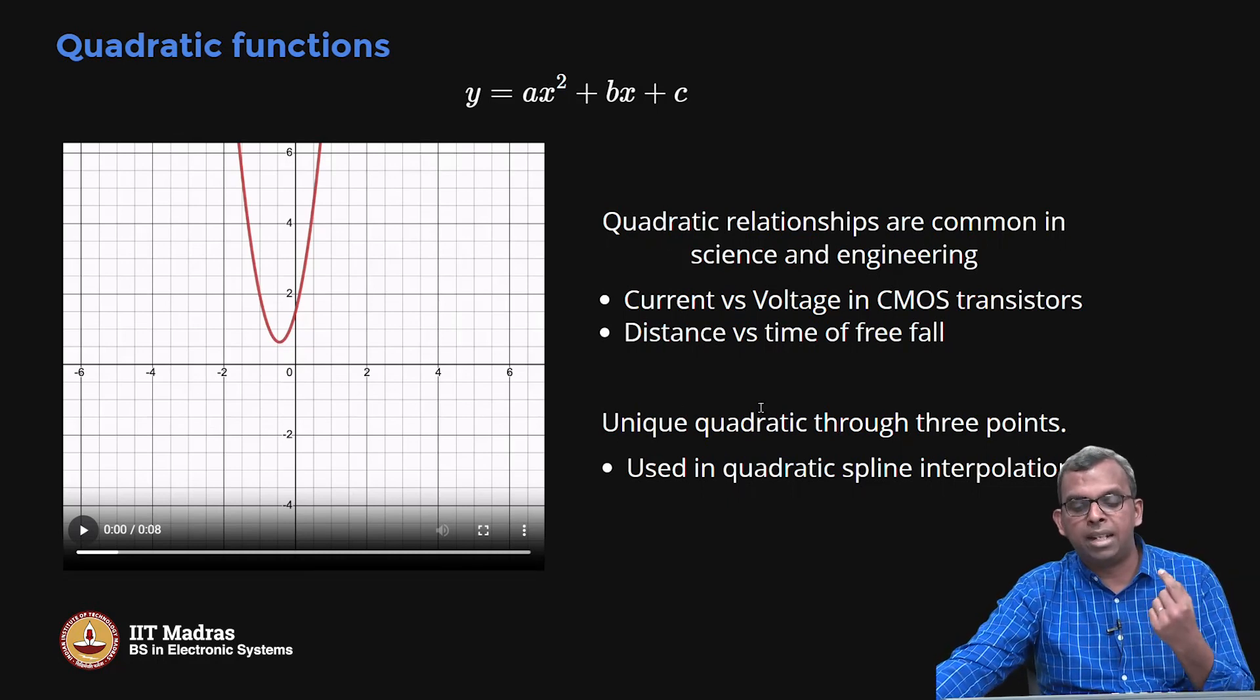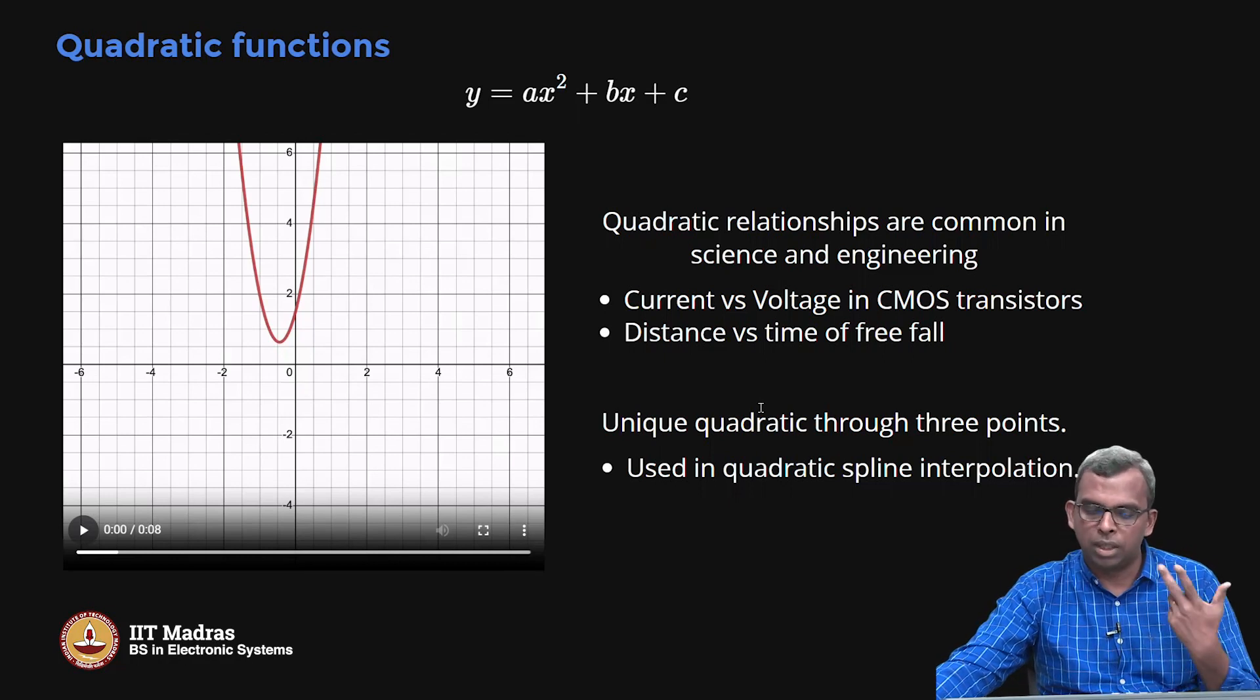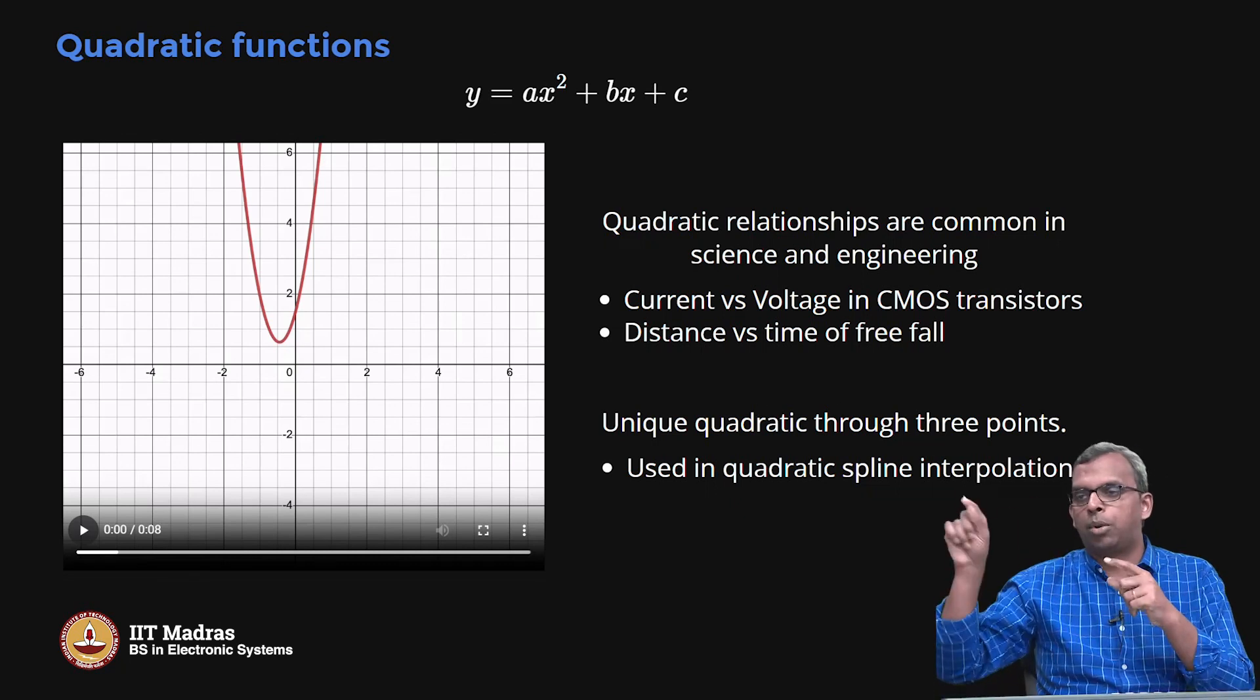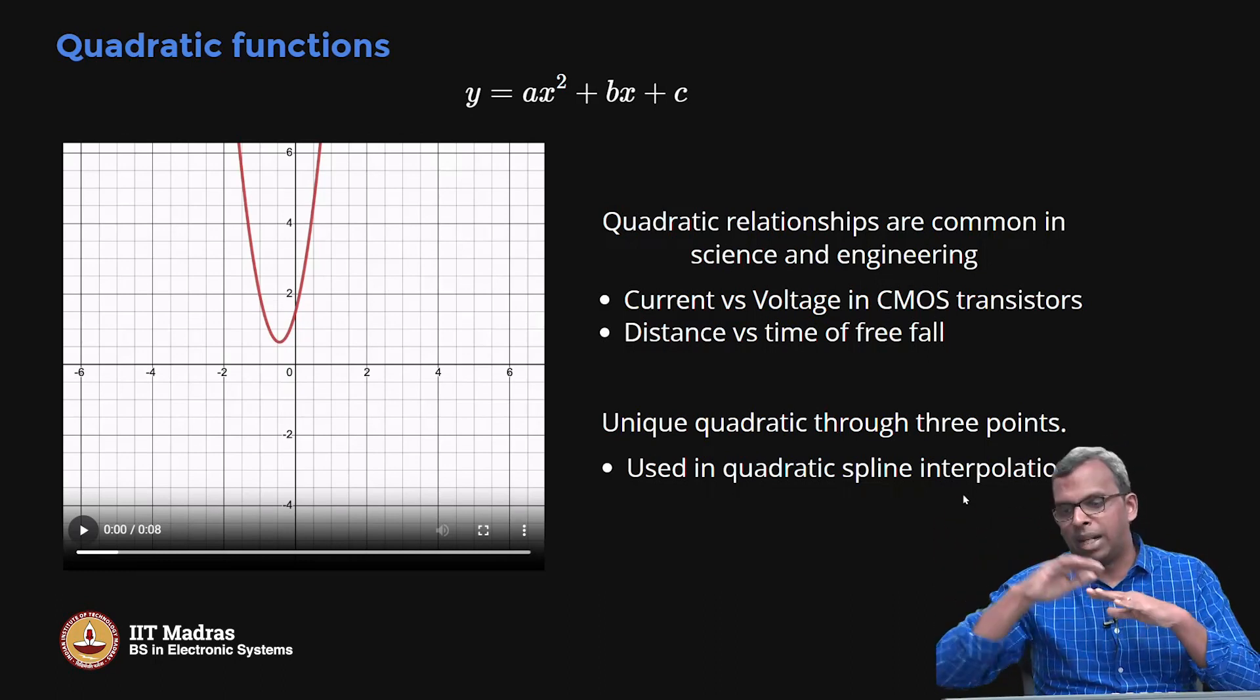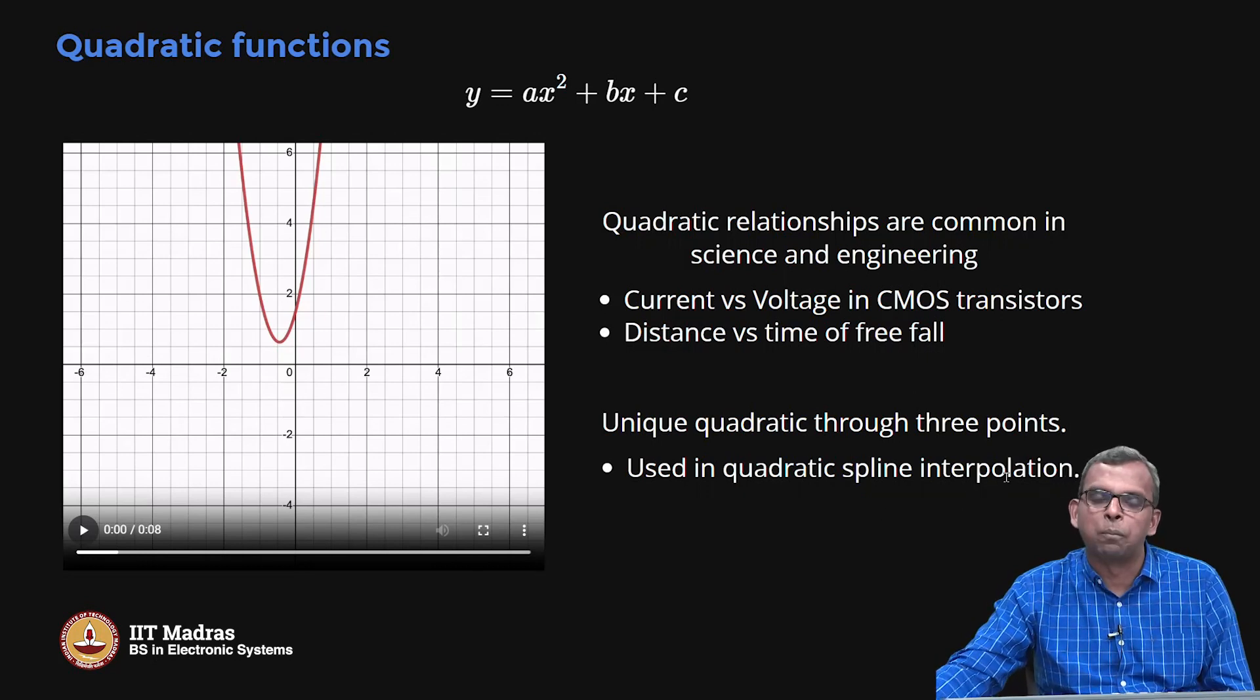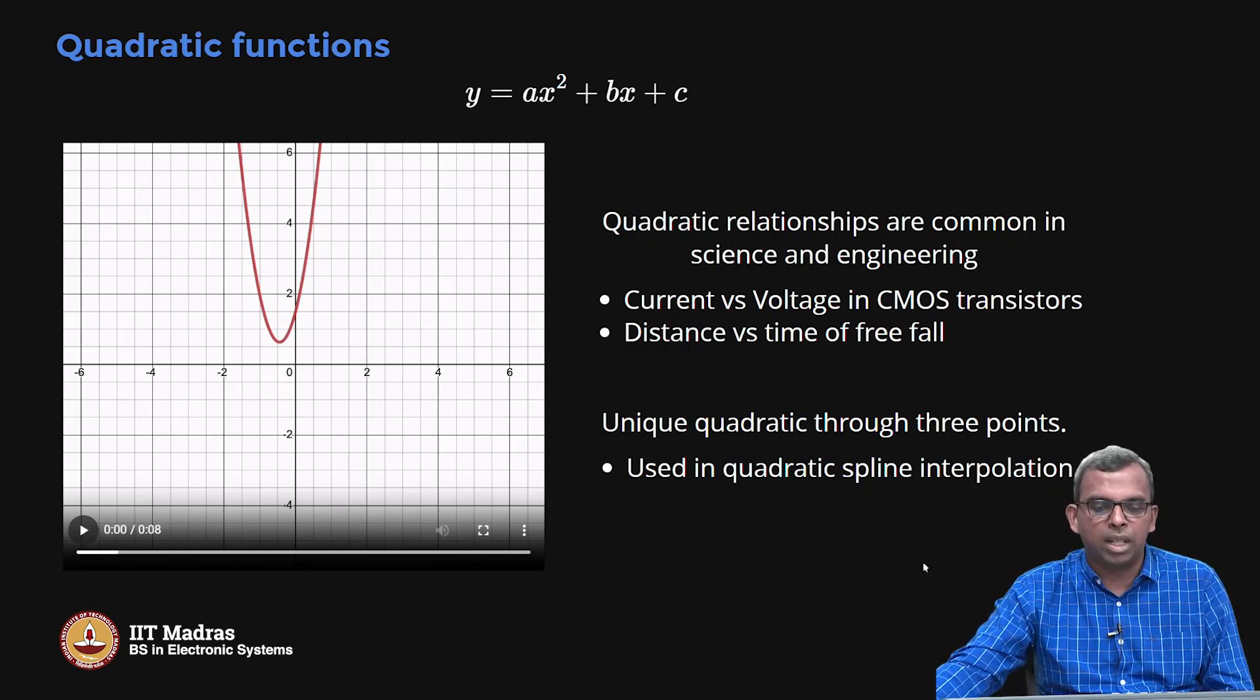So in fact, just like two points have a line, three points will have a unique quadratic. So you can think about why that is true. Three points will have a unique quadratic usually and so that results in something called quadratic spline interpolation. So quite often a lot of data points are interpolated, quadratic spline, and to get a very smooth, smooth looking shape, not really smooth, but smooth looking shape you can get. So this is quadratic.